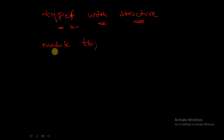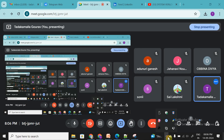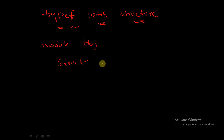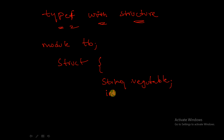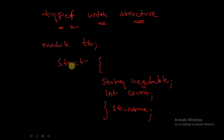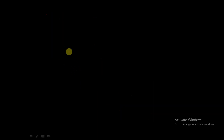Let's take a module 'tb' and define a structure in this module called 'struct'. In this struct, I will define some fields: a string called 'vegetable' and an int called 'count'. The instance of the structure is called 'ht_name'. I am not using typedef here — remember this.